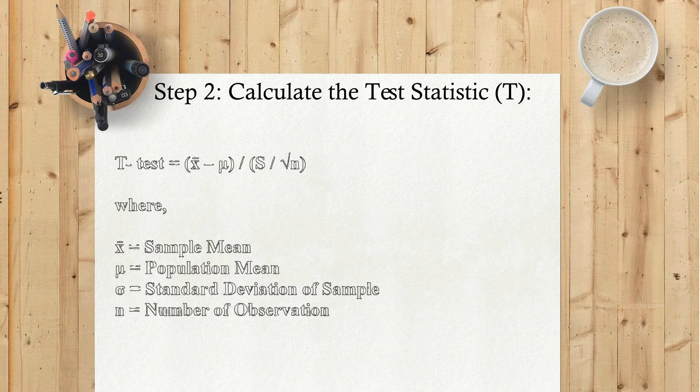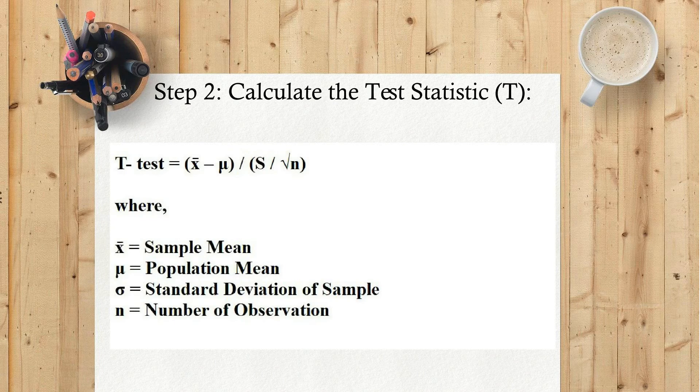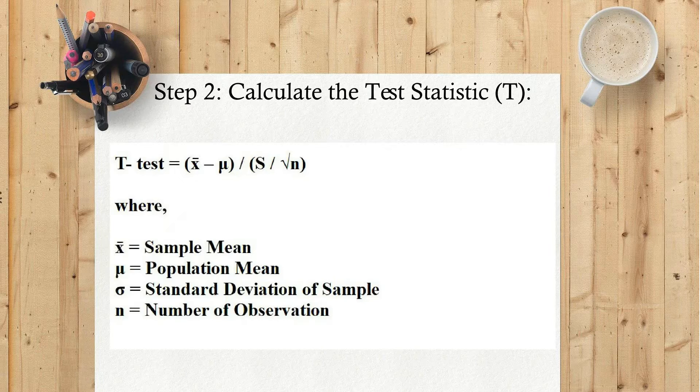Step 2: Calculate the test statistic T. t-test equals x̄ minus μ divided by s divided by square root of n, where x̄ equals sample mean, μ equals population mean, s equals standard deviation of sample, n equals number of observations.